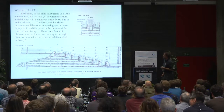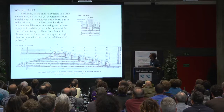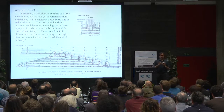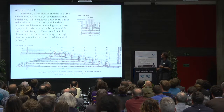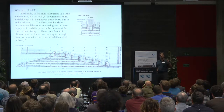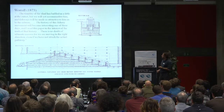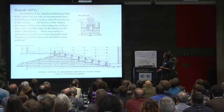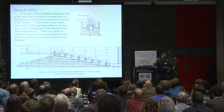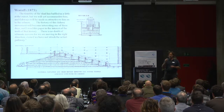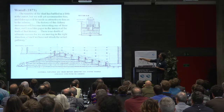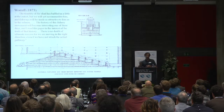I am going to give you a North American perspective. So this is from Wall, 1873. One of the concerns in the 1870s was in particular the problem of shad and river herring, which you also have here in Europe. They have been posing a particular problem for fish passage. We have this quote from Wall in 1873: 'The timidity of the shad has baffled us a little at the outset, but we will yet accommodate him, and fishways will be made as attractive to him as to the salmon.' They'd had some success with salmon, but shad were causing a problem. And: 'There is no doubt of ultimate success' — so 150 years ago, they said we have a little problem but we're getting there.